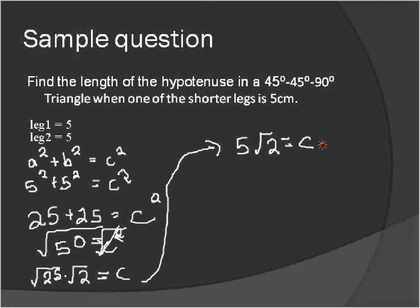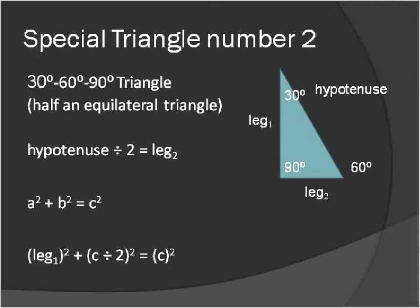What that gives us is that 5 square root of 2 is equal to the length of c. And you'll see that this is a pattern throughout all 45-45-90 triangles that the length of the shorter legs times the square root of 2 will give you the length of the hypotenuse for any of those triangles. You'll see that pattern as you start solving for more of those triangles.